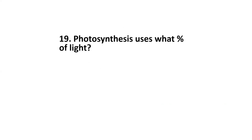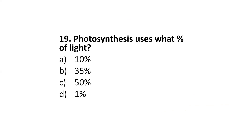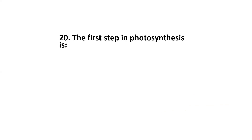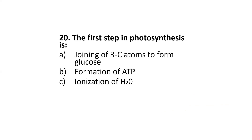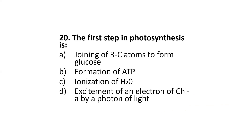Next: photosynthesis uses what percentage of light — 10%, 35%, 50%, or 1%? The correct option is 1%. Next: the first step in photosynthesis is — joining of three carbon atoms to form glucose, formation of ATP, ionization of water, or excitement of an electron of chlorophyll a by a photon of light? The correct option is option D.